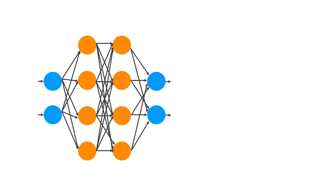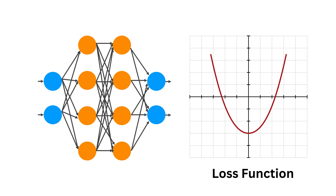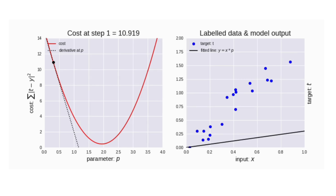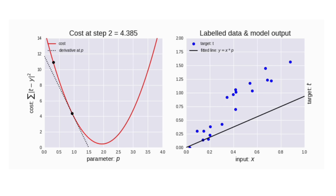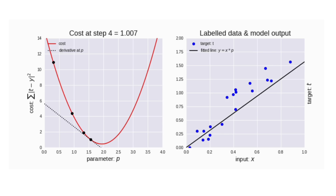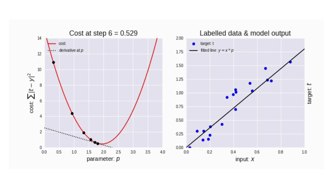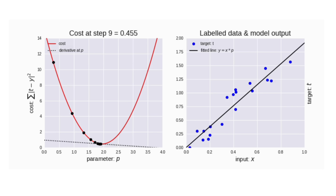In machine learning, instead of temperature, we have a loss function, which tells us how wrong our model is. The gradient tells the model which direction to change its parameters in order to reduce error the fastest. So eventually, the model follows the gradient to reach the lowest point, which represents the best possible solution.